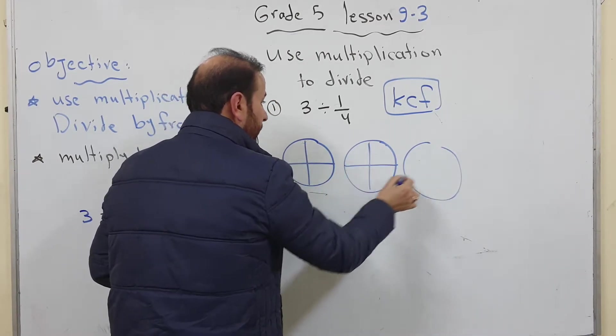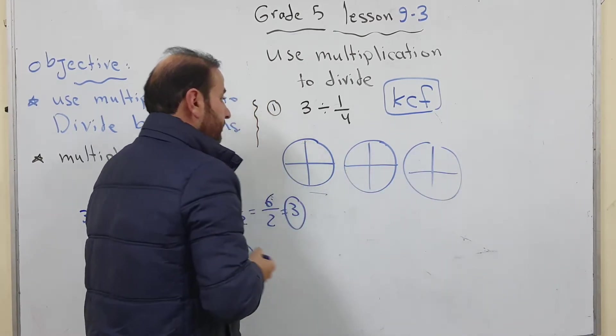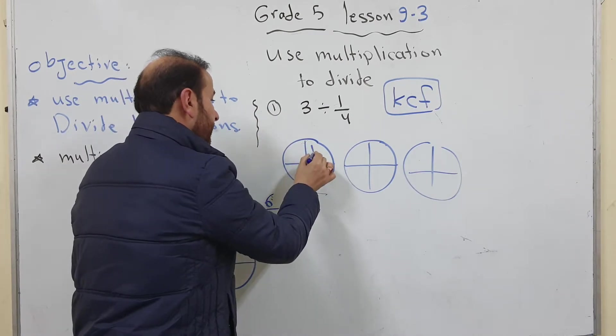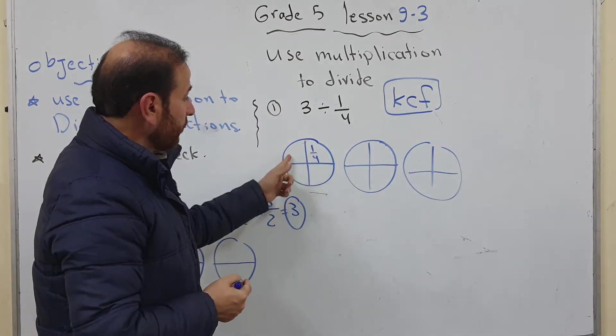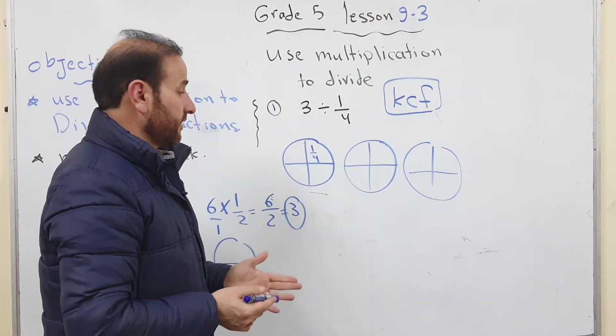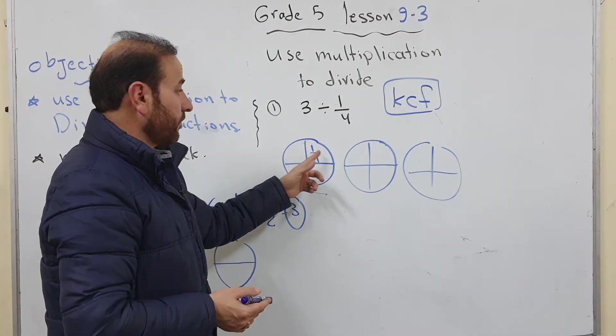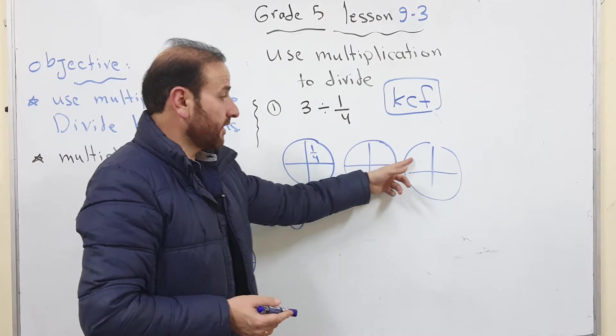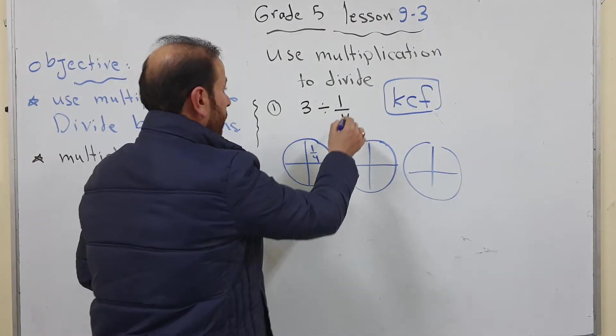I divide them into quarters. 1 over 4, 1 over 4, 1 over 4 like this. 1, 2, 3, 4, 5, 6, 7, 8, 9, 10, 11, 12. So the answer will be 12.